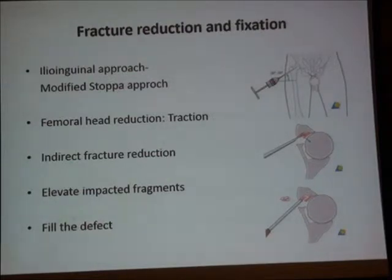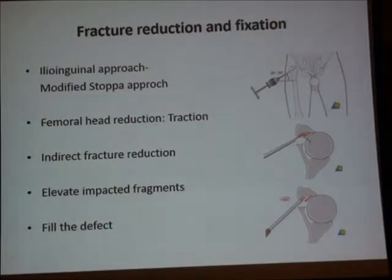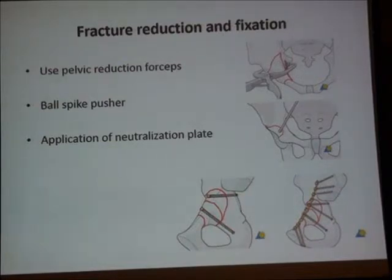The traction will unload the fracture site and reduce the fracture indirectly, but we must fix it to maintain anatomical reduction. If there is marginal impaction, we should address it — elevate the depressed fragment as in any intra-articular fracture, like a tibial plateau fracture, and apply bone graft. All reduction techniques help here: pelvic reduction clamps, bone spike pusher. We will apply lag screws and a neutralization plate.